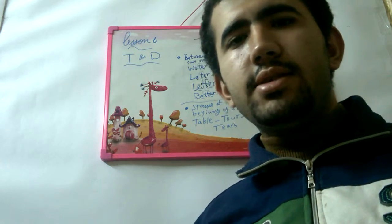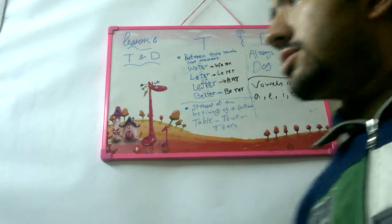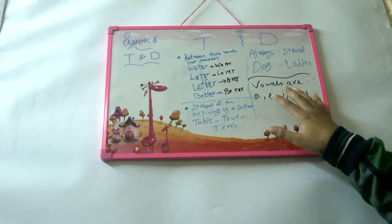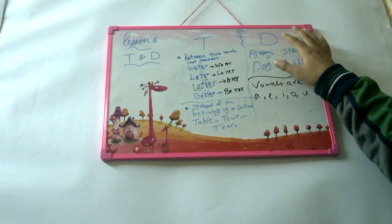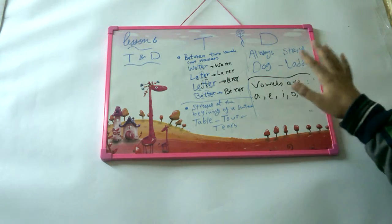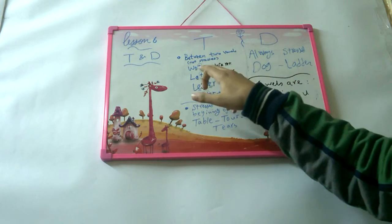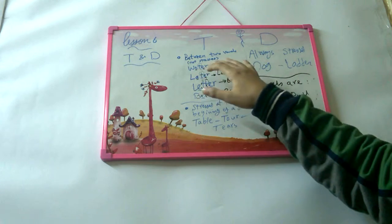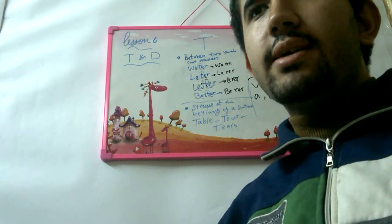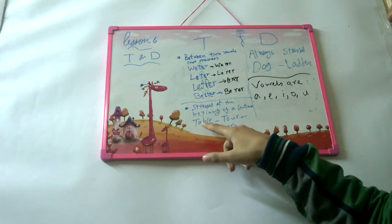We can also slightly say the T at the end of a word, like 'late.' So what we've learned today: vowels are A, E, I, O, U. We stress D always — 'dog,' 'ladder.' T has two rules: between two vowels it's not stressed, like 'letter'; at the beginning of a word it's stressed, like 'table.'